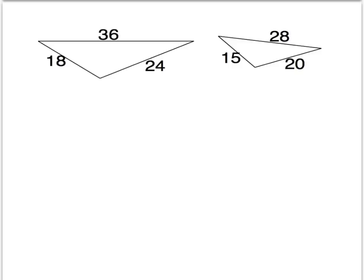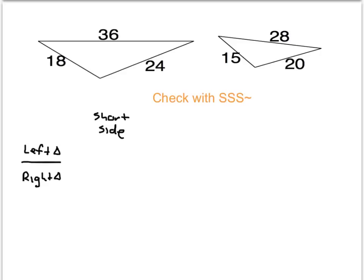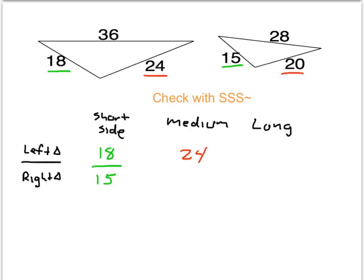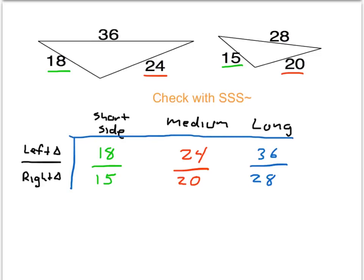How about these two triangles — can we prove that they're similar? Since we don't know anything about angles, we want to check using SSS similarity. In the triangle on the left, the shortest side is 18. In the triangle on the right, the shortest side is 15. So that's one ratio: 18 to 15. The medium side in the left triangle is 24, and the medium side in the right triangle is 20. The long side in the left triangle is 36, and the long side in the right triangle is 28. We want to check whether these three fractions are equal to each other.